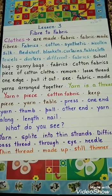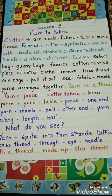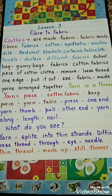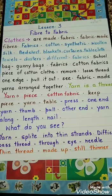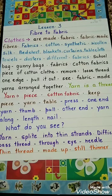Take yarn from a piece of cotton fabric. Keep this piece of yarn on the table, then press one end of the yarn with your thumb and pull the other end of the yarn along its length with your nail. What do you see? The yarn will split into thin strands. This means the end of the thread is separated into a few thin strands.